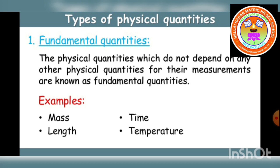The physical quantities which do not depend on any other physical quantities for their measurements are known as fundamental quantities. Totally 7 fundamental quantities we have. Examples given here: mass, length, time, temperature.